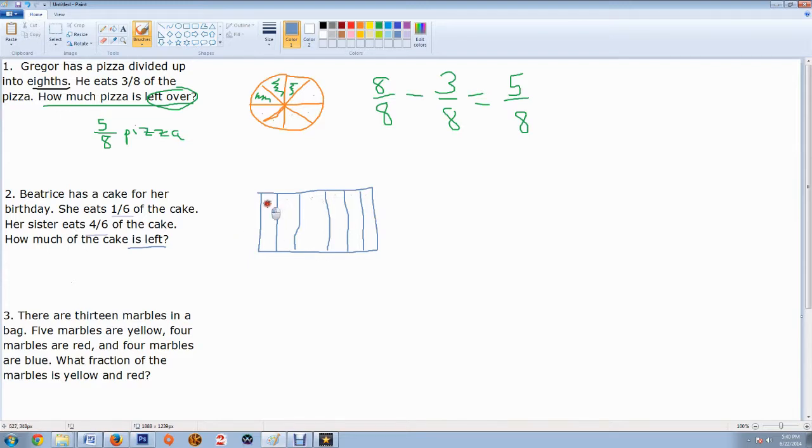And she got to eat one. And her sister got to eat, let's do a darker color, four-sixths. One, two, three, four. So we can see, we know that one-sixth is left over just by our picture. But let's say we didn't have time to draw a picture. How would we write out this problem as a number sentence like that?